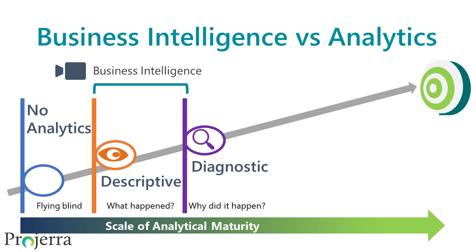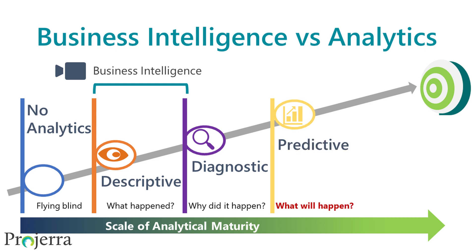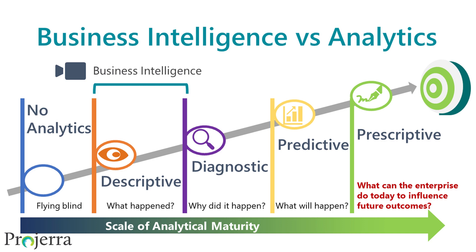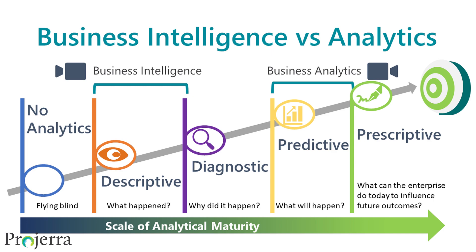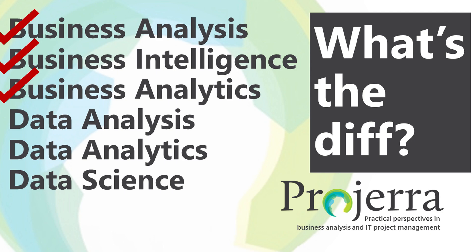The next level are organizations asking what will happen. They do historical analysis, develop trends, and make predictions about next quarter, next year, maybe even three to five years in the future — always looking forward. And while looking forward, they ask what the enterprise can do today to influence future outcomes — that is prescriptive analysis. Taken together, predictive and prescriptive analysis is what we refer to as analytics.